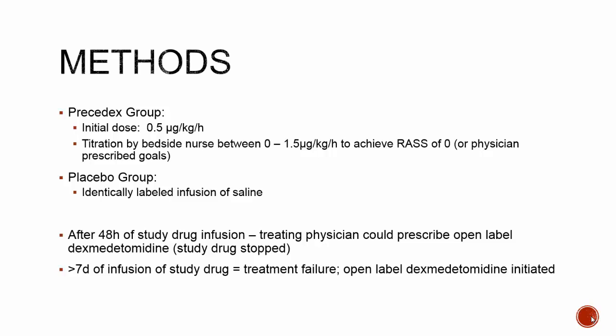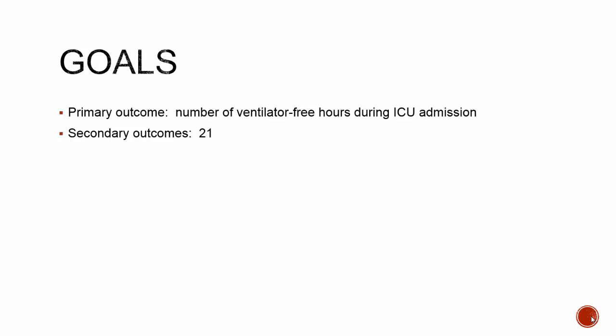The initial treatment dose was 0.5 mcg/kg/hour, titrated by bedside nurses from 0 to 1.5 mcg/kg/hour to achieve a RASS of 0 — alert and calm — or the physician's prescribed goal. The placebo group received an identically labeled saline infusion. After 48 hours, the treating physician could prescribe open-label Precedex if necessary, stopping the study drug. If the study drug continued for seven days, it was considered a treatment failure.